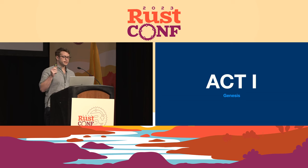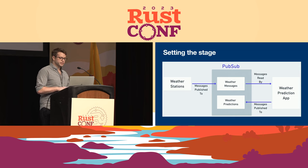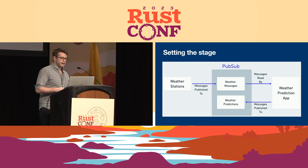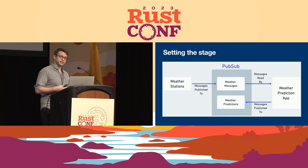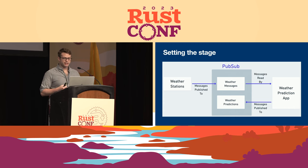We'll begin by setting the stage. This is the world in which our heroine, Mary the Message, lives. We have a collection of weather stations, each publishing measurements to a message queue system called PubSub. The weather stations are publishing messages to a weather messages topic. This is a queue, and messages that arrive there are stored in order. Our weather application then reads from this topic, processes that data, and publishes weather predictions to a weather predictions topic.